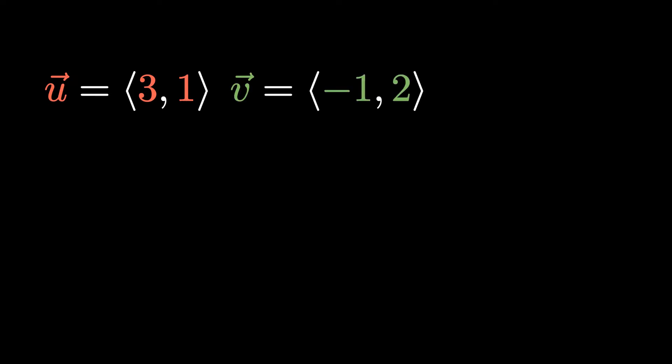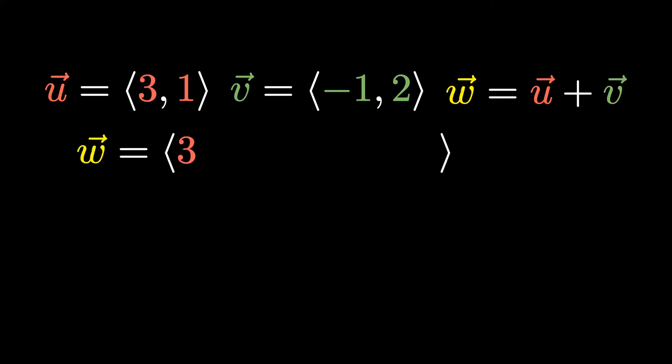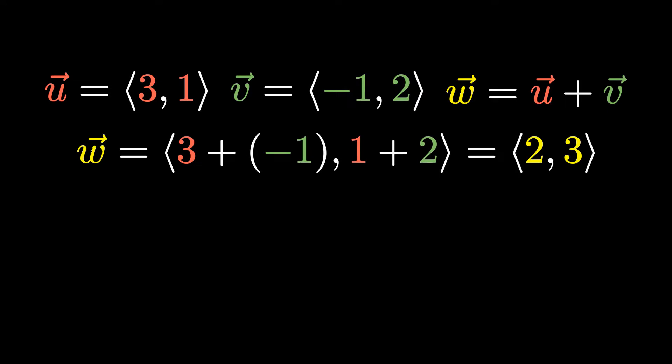So let's say we have three vectors: vector u being equal to (3, 1), vector v being equal to (-1, 2), and then vector w being equal to the sum of vectors u and v. Now to compute vector w, what we would do is add the like components of vectors u and v. So we would do 3 plus negative 1 and then 1 plus 2, and that would give us an output of (2, 3). And this is essentially how we calculate the sum of two vectors.